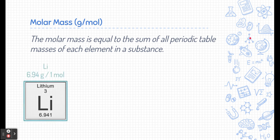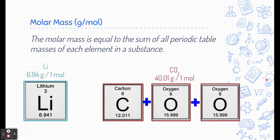In our previous example, lithium has an atomic mass of 6.941 on the periodic table. If we change those units to grams, that's how much we would need to weigh to get one mole of lithium — so one mole of lithium equals 6.94 grams. For carbon dioxide, which is made of one carbon and two oxygens, if we add up all the atomic masses, one mole of carbon dioxide is 44.01 grams.